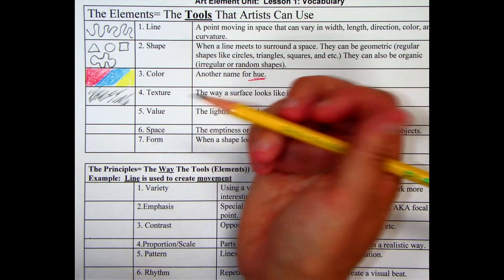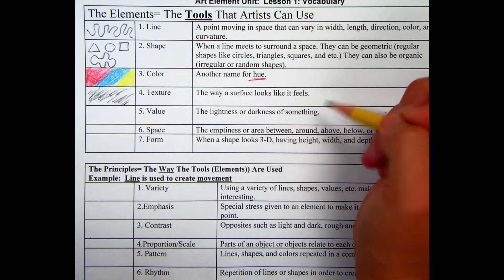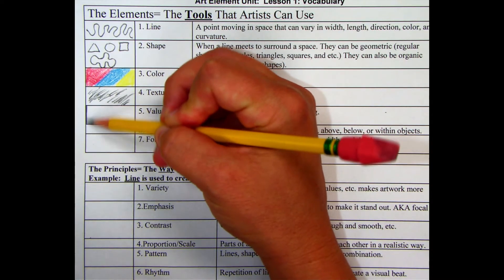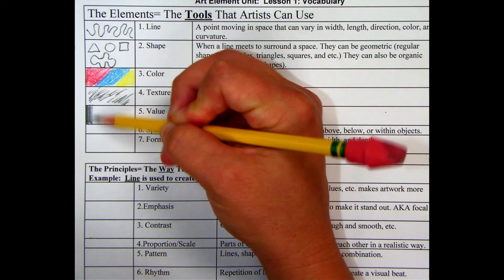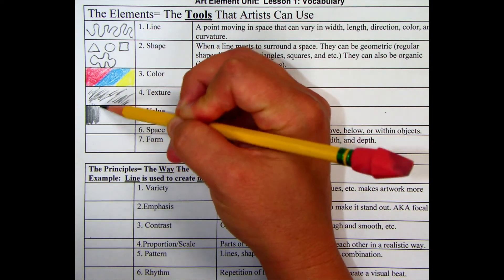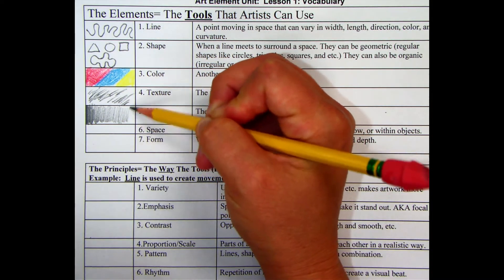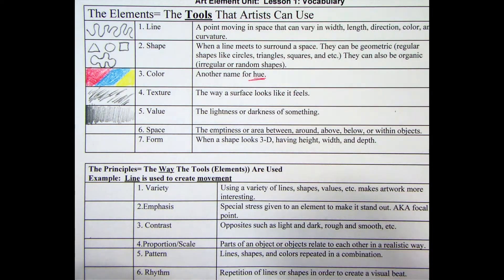Now, value is the lightness or darkness of something. So you can go ahead and do a value scale that goes from dark to light as you go down.